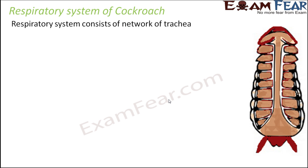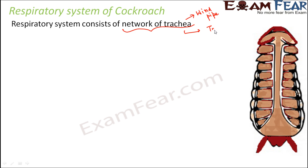Cockroaches have a network of trachea. Trachea is nothing but the windpipe — a tubular structure which helps to conduct air. Being terrestrial, the cockroach takes oxygen from the air present in its surroundings. Instead of having just one trachea, insects have a network of trachea, and this network is termed the tracheal system.